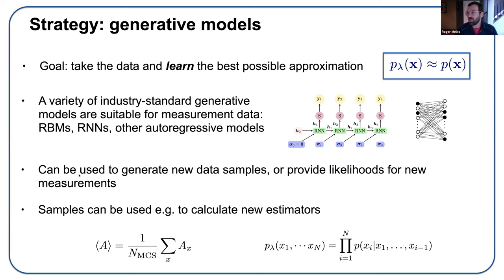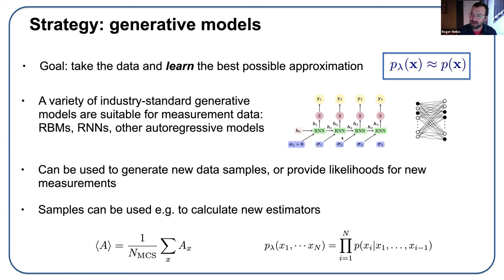Why do we bother to learn generative models? Once the model is trained on the data we have access to, we hope it generalizes well. We can generate new data samples and from these calculate estimators, or produce likelihoods for new measurements. Autoregressive models have an additional property: they give you a normalized distribution. Recurrent neural networks and transformers — unlike a Boltzmann machine — give you knowledge of the partition function or a normalized distribution that allows you to draw independent samples.